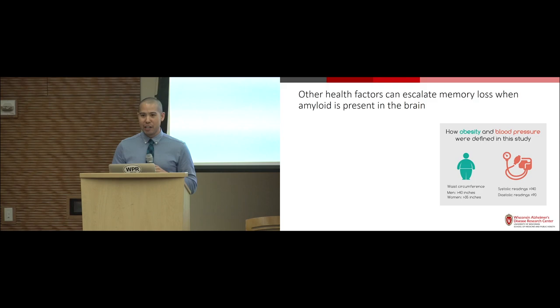In the meantime, while drug trials are being created and underway, we need to be looking at things we can do now to prevent or modify this disease - things in our control. This is something our center is very active in. My colleague Dr. Lindsay Clark recently published a study looking at how other health factors contribute to memory loss in the context of having high amyloid levels in your brain. She looked at obesity, defined as having a larger waist circumference, and high blood pressure, defined as greater than 140 over 90, to see what effect these conditions have on brain performance.